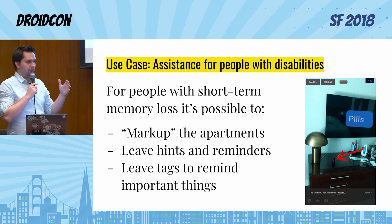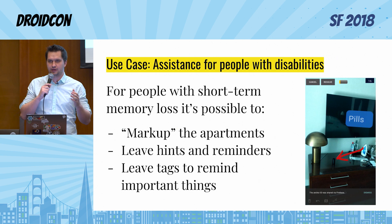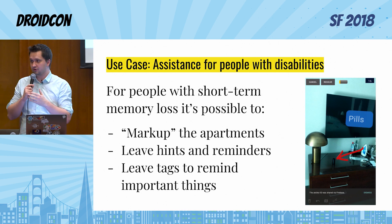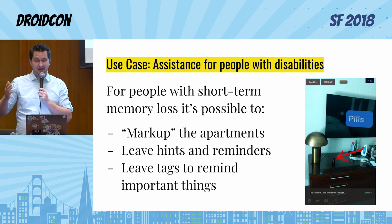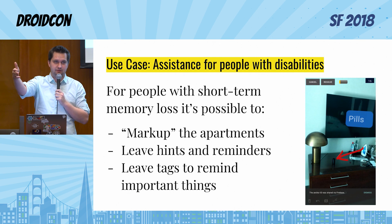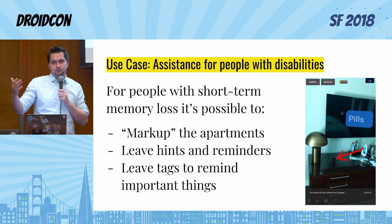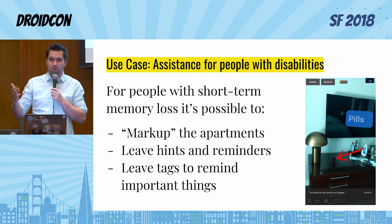Another use case we found for this technology is assistance for people with disabilities. For example, there are people with a disability like short-term memory loss who can forget where something is located. It's possible to create a small application that just points to the place where the pills are located, or use anchor technology to mark a tube with pills as an anchor — wherever that tube will be located, you can see that here are the pills you can take. You can also create tags inside of the room to remind people to do things. It won't take a lot of development effort and can dramatically improve life quality for people with disabilities.